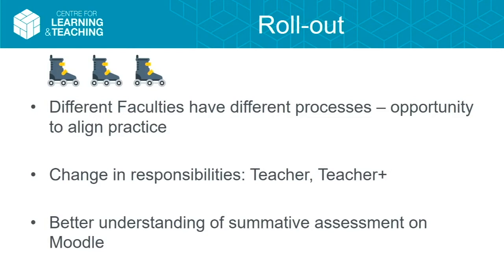One problem we've found at the institution is that online marking and anonymous marking have drifted in over the years, and different faculties and departments have ended up with their own approaches to the marking process. One faculty last year spent six months trying to map just the assignment process — it's devilishly complicated when you add in blind marking, moderation, and all the rest. So in addition to rolling out this tool, we've also been doing a lot of process mapping work across the team to streamline the process.